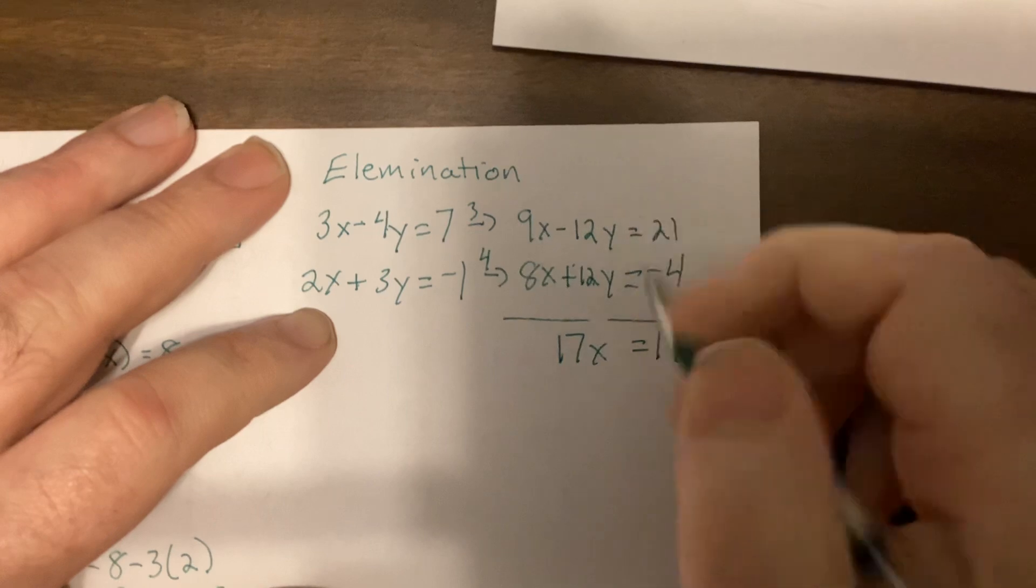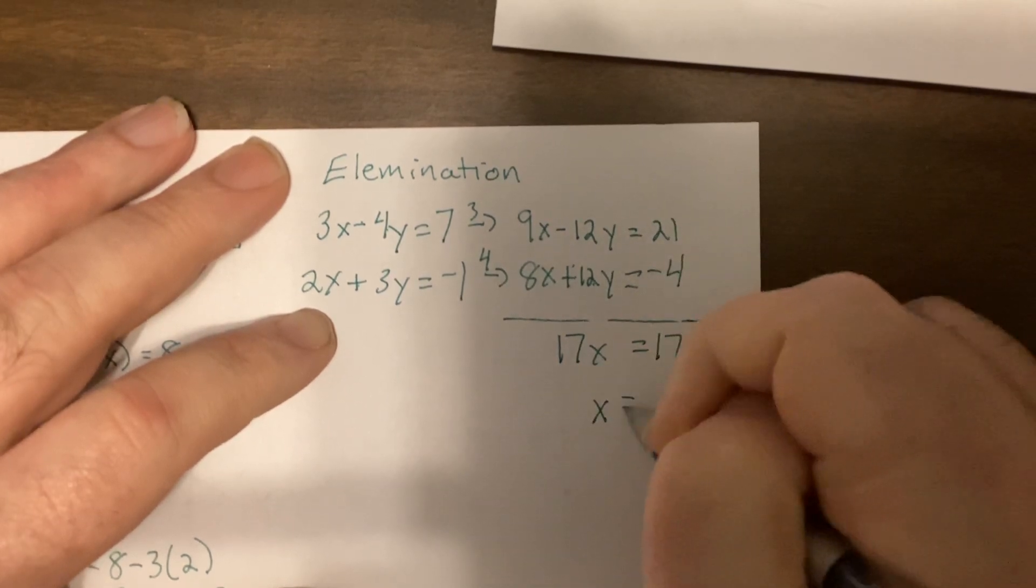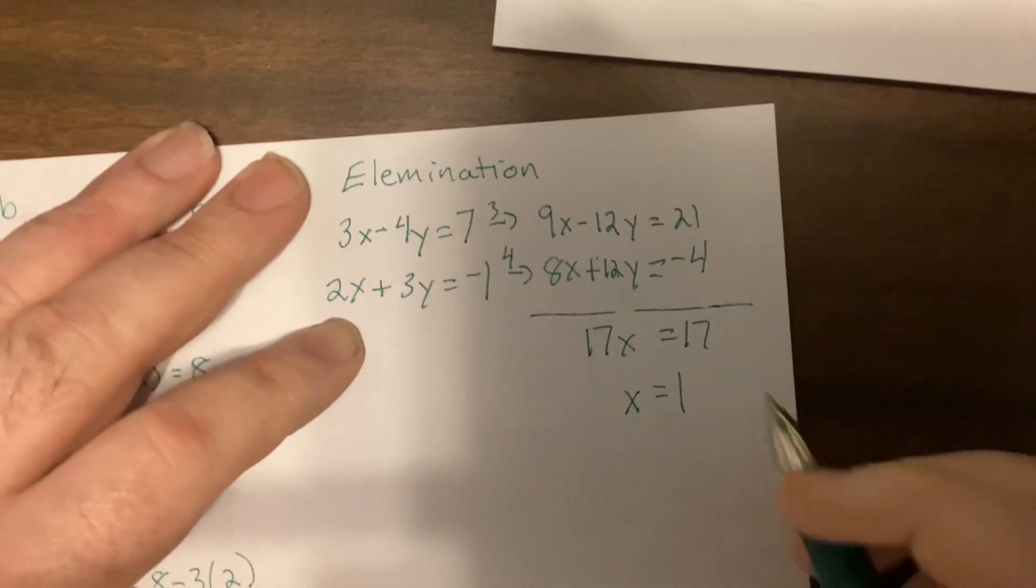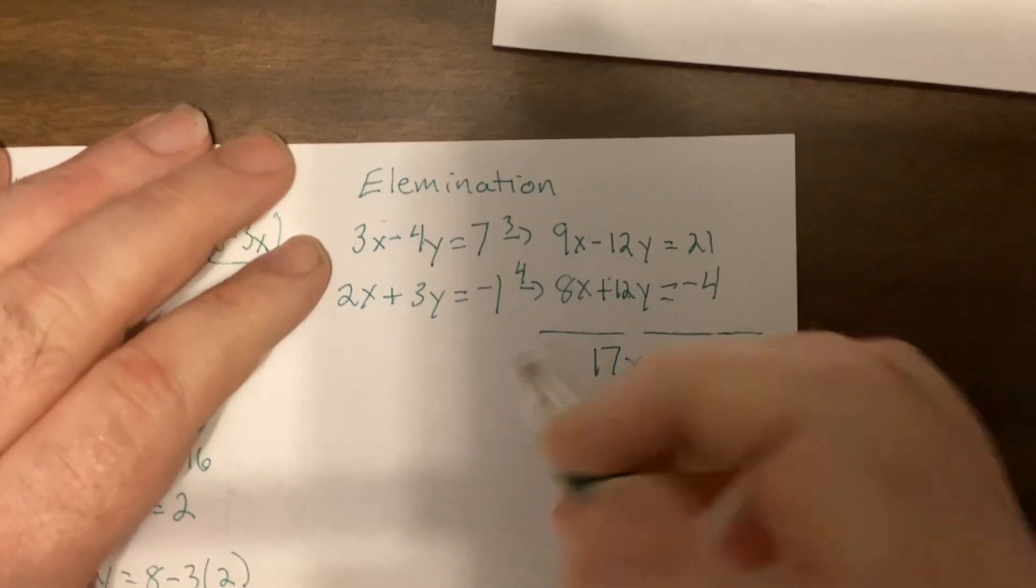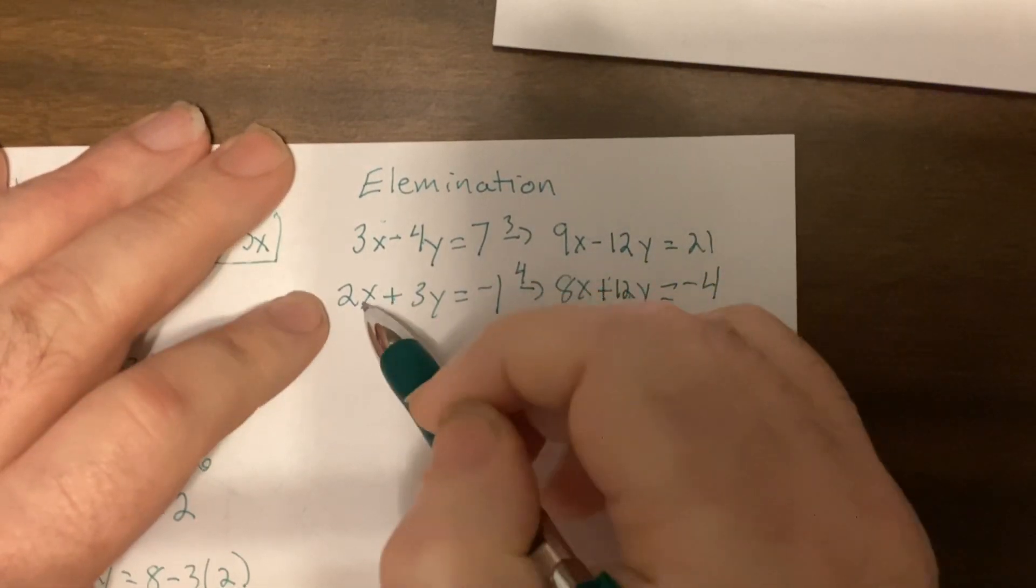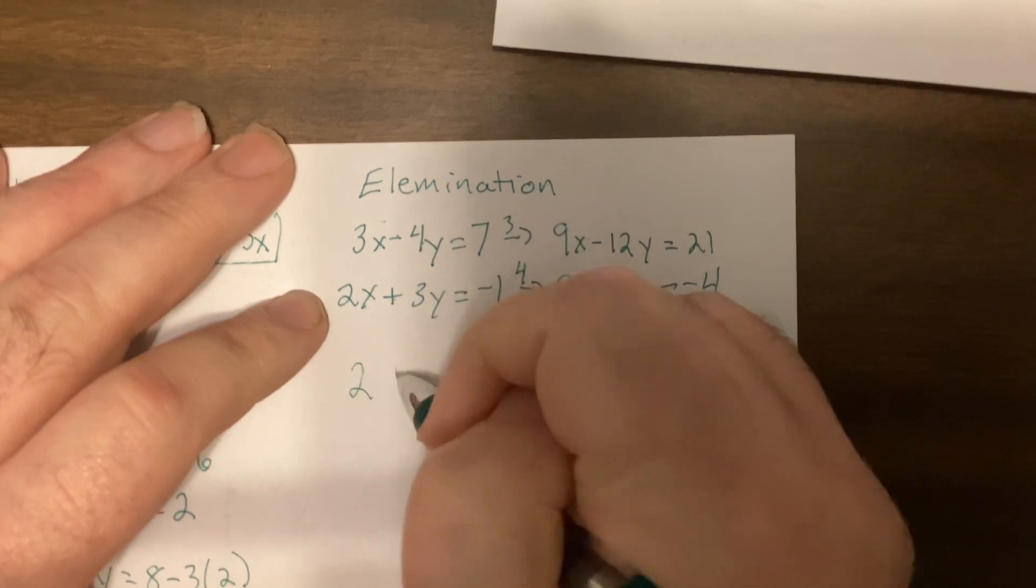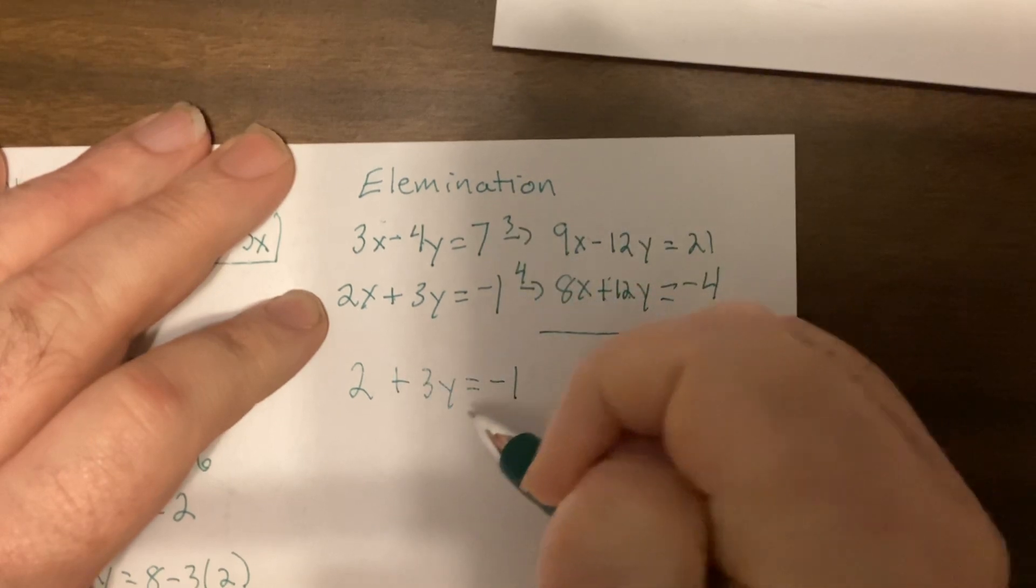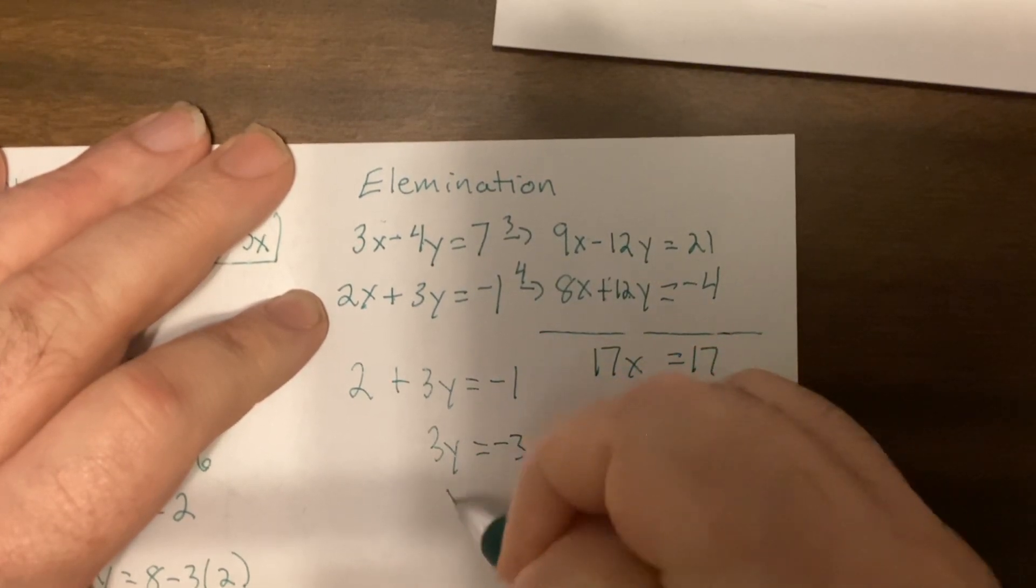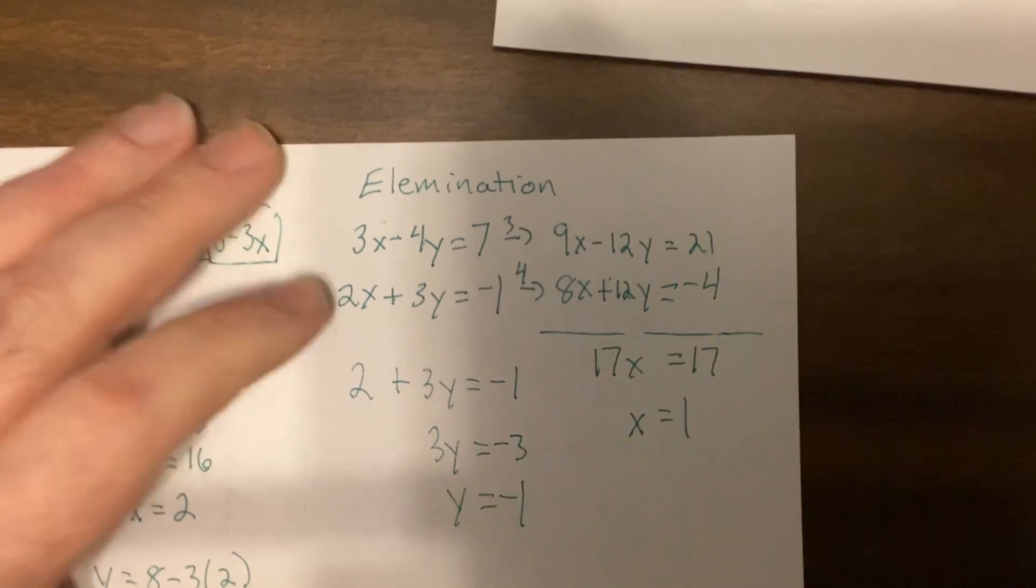So divide by 17, x is 1. Put it back into either here, here, or here, doesn't matter which one if you did it correctly. So I'm going to do it here just because it's smaller. 2 plus 3y equals negative 1. Subtract 2, 3y equals negative 3, so y equals negative 1.